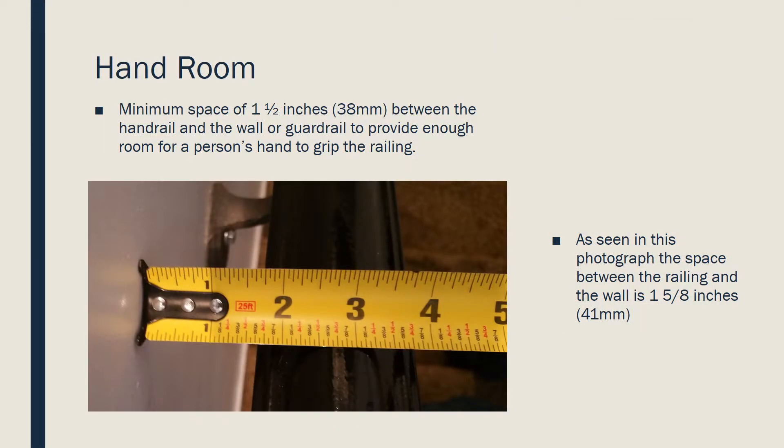There must be a minimum space of an inch and a half between the handrail and the wall or guardrail that it attaches to, in order to provide enough room for a person's hand to grip the railing. As seen in this photograph, the space between the railing and the wall is an inch and five-eighths, which is one-eighth of an inch larger than the minimum.